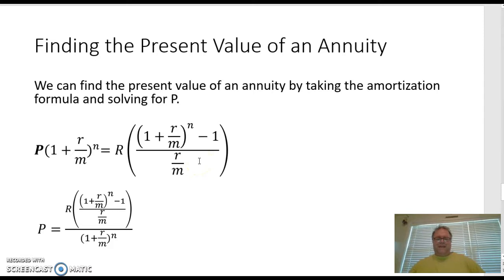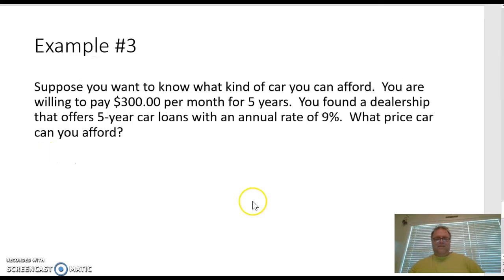So let's do the last thing here. This is finding the present value of an annuity. We can find the present value of an annuity by taking the amortization formula and solving for P, which is our principal here. So once again, instead of the R that we did in the beginning, we're going to now solve for the P. Let's see if you can do this on your own and then come back. Suppose you want to know what kind of car you can afford. You're willing to pay $300 per month for a five-year loan and you found a dealership that offers a 5-year car loan with an annual rate of 9%. What price car can you afford?